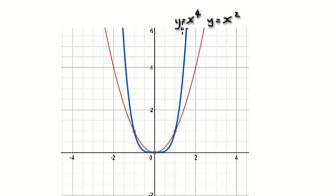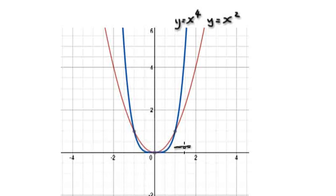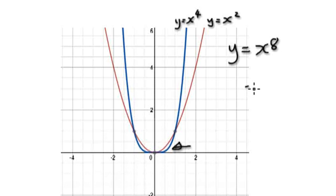If you plot these lines, this is y equals x to the power of 4, and this is y equals x squared. This here is still a U shape, and this here is just a flatter U shape. Play around with it — you could do y equals x to the power of 8 or x to the power of 6. All these give you some sort of U shape.